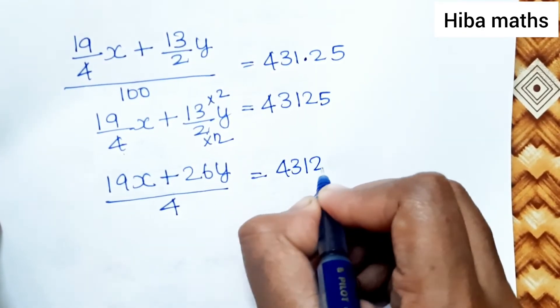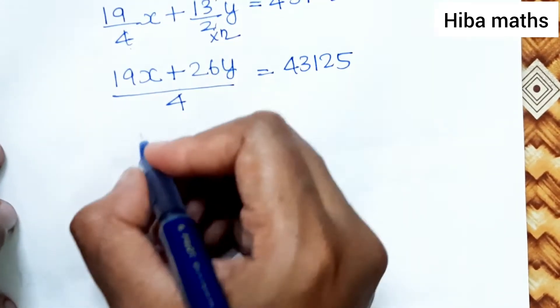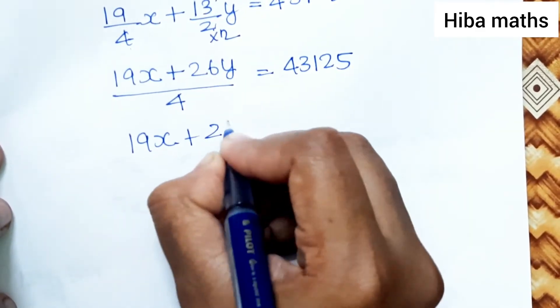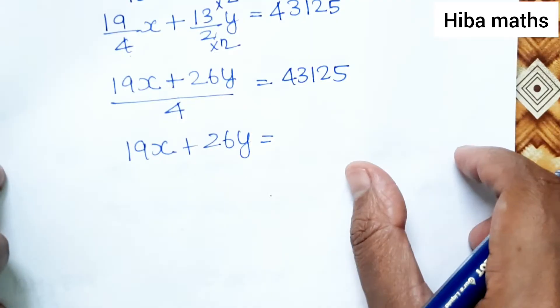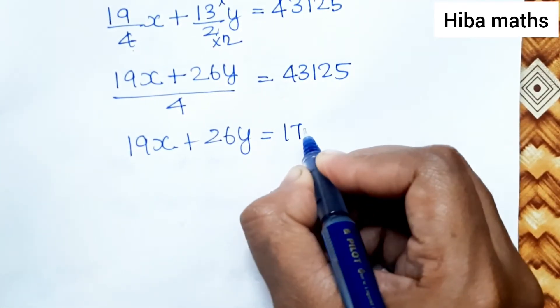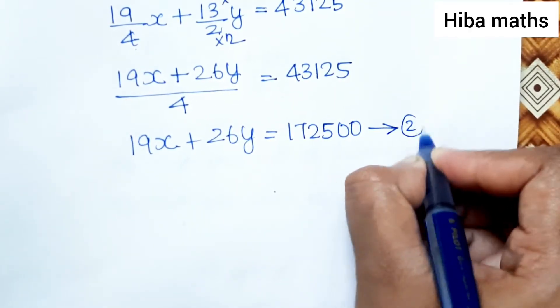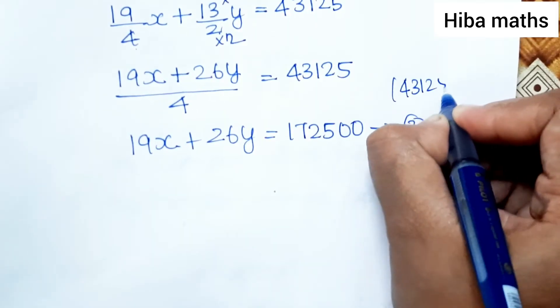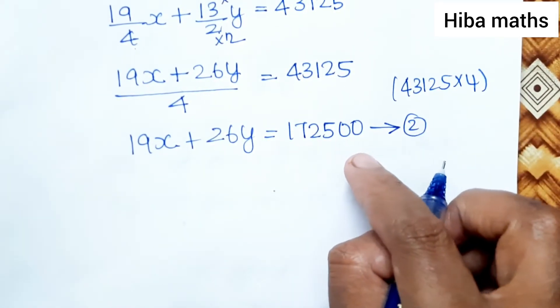Multiplying both sides by 4: 19X plus 26Y equals 172500. This is the second equation. The first equation is X plus Y equals 8,600.